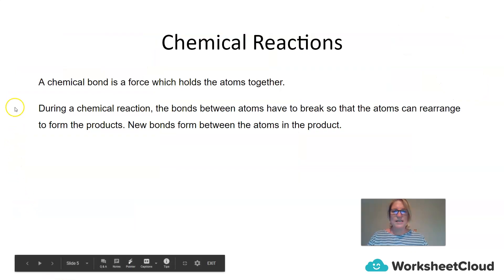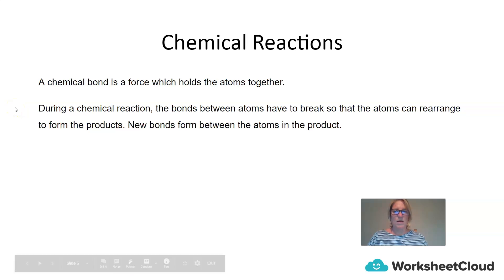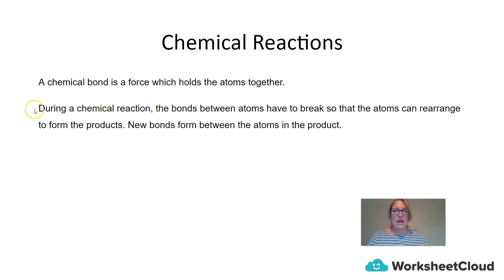This lesson we're going to have a look at chemical reactions. A chemical bond is a force that holds atoms together, and during a chemical reaction — fermentation — the bonds between the atoms have to break so that the atoms can rearrange to form products. New bonds form between the atoms of the products.